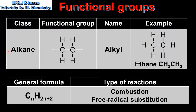The first example that we'll look at is the alkanes. Alkanes are saturated hydrocarbons which are composed of carbon and hydrogen atoms only. The class name is alkane and the functional group name is alkyl. The functional group is a carbon to carbon single bond. On the right we can see an example of an alkane that has two carbon atoms which is named ethane. The general formula for the alkanes is CnH2n+2.